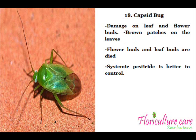Capsid Bug damages leaf and flower buds. It is a sap-sucking insect. Brown patches appear on the leaves, and flower buds and leaf buds die after the damage. A systemic pesticide is better to control it.